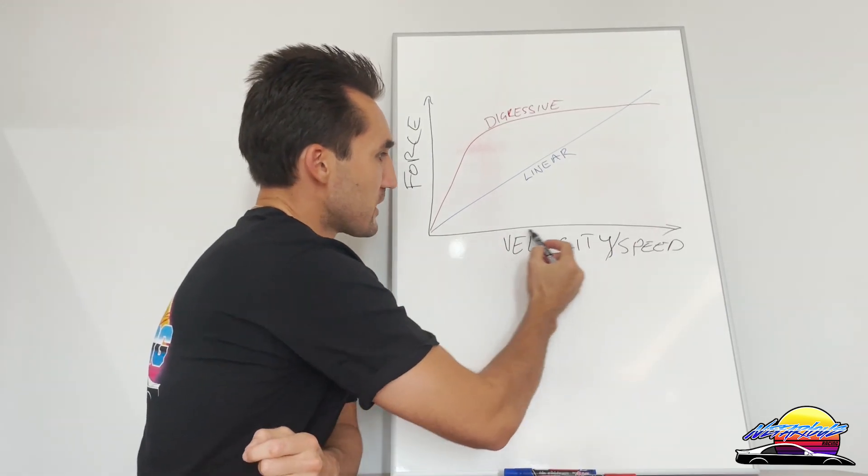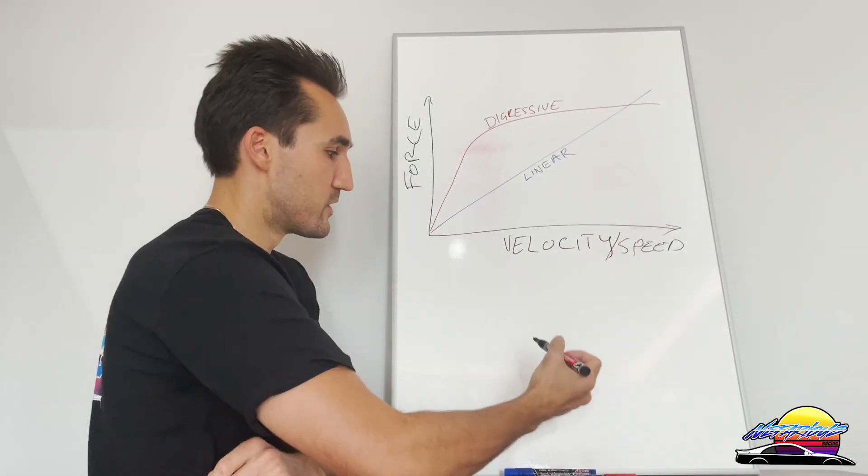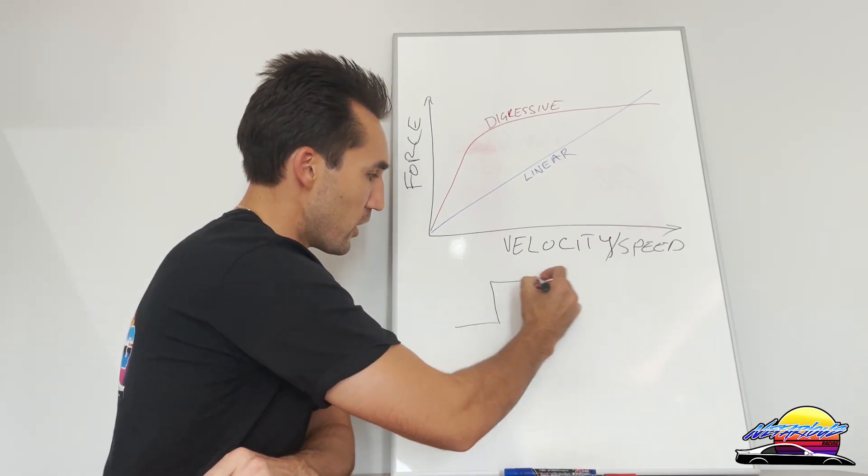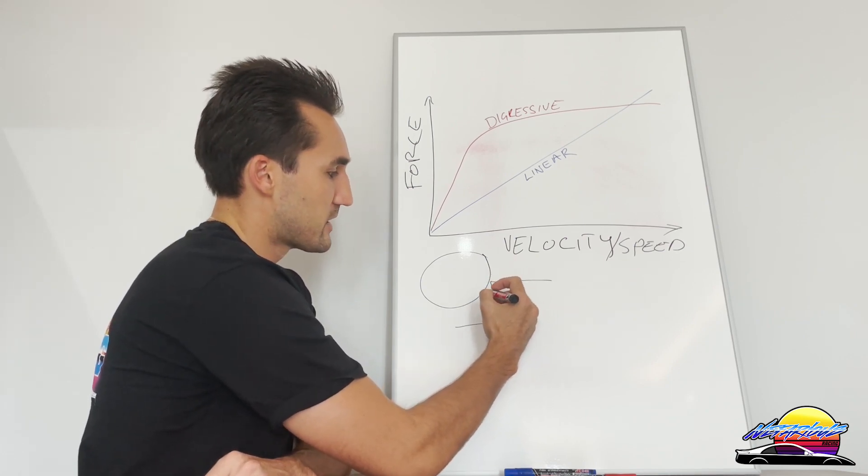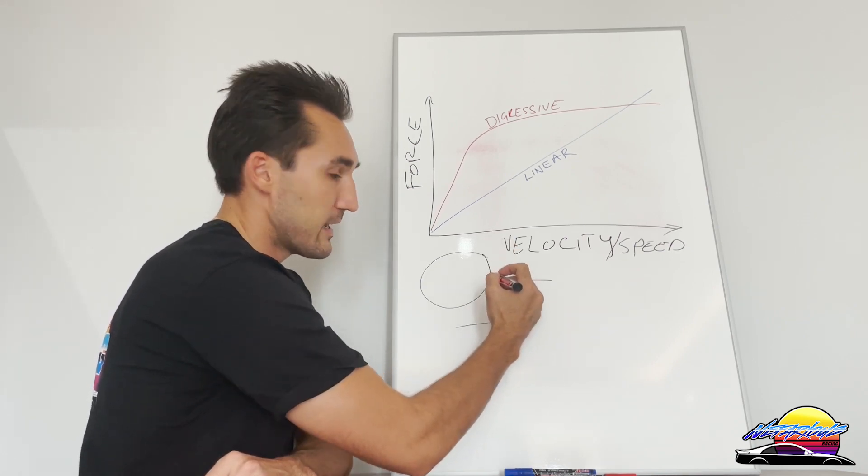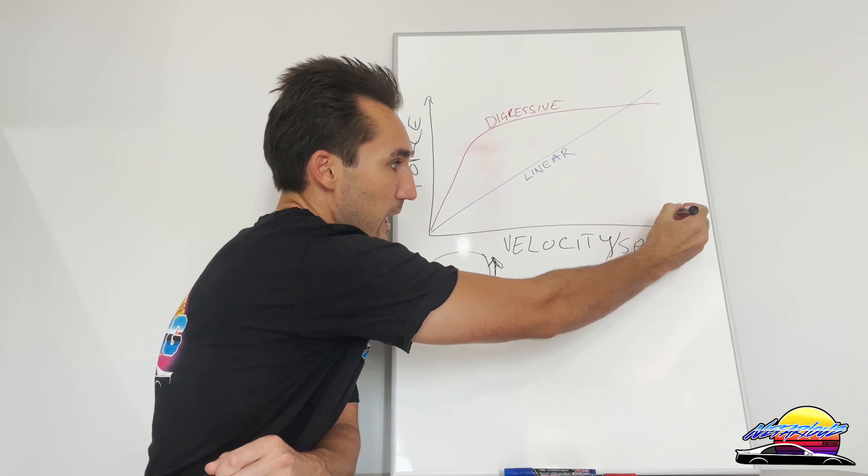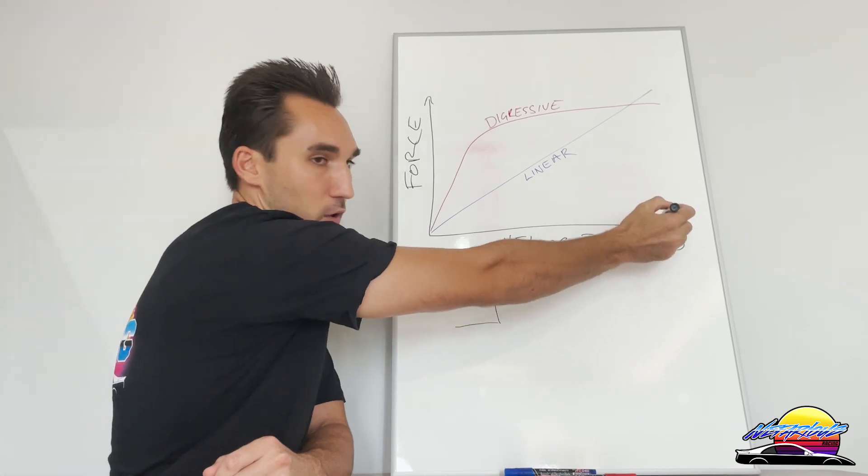Along this line is how quickly the damper moves. To give you an example, let's say you hit a square curb with the wheel of the car. That would cause the wheel, and as a result the damper, to move very quickly up. The speed would be very high up here. If you hit that at speed, like a very big sharp bump, you'd be somewhere here on the velocity line.